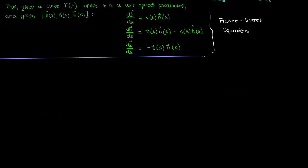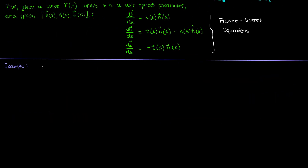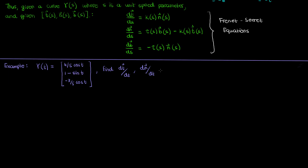Let's now solve an example problem involving the Frenet-Serret equations. Suppose I have a three-dimensional curve gamma of t given by a specific vector-valued function. Our goal is to use what we know along with the Frenet-Serret equations to find the rates of change of the tangent, normal, and binormal vectors, and to find the curvature kappa and torsion tau as functions of the parameter t.